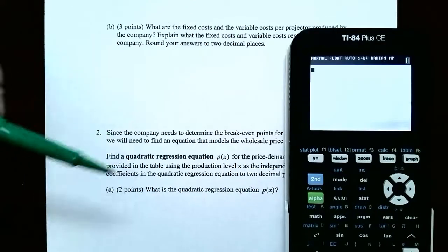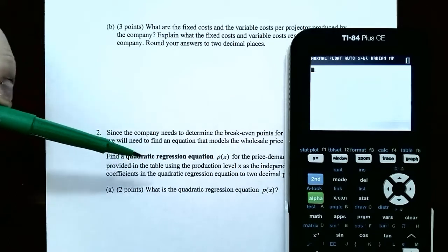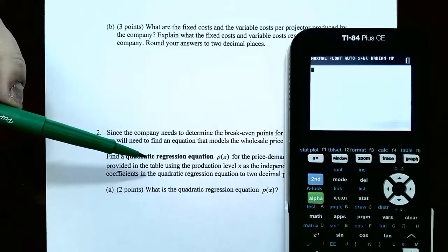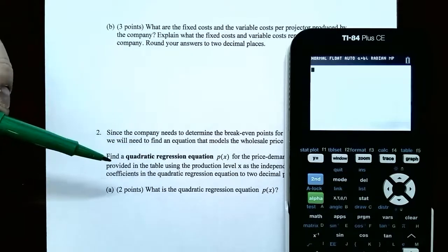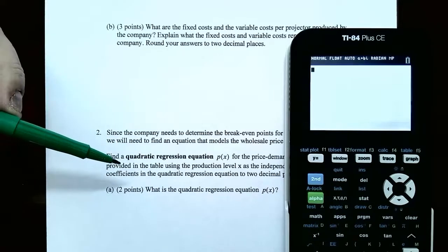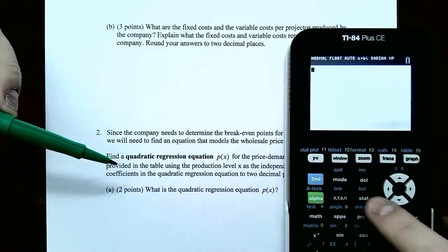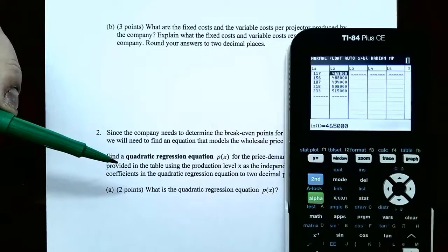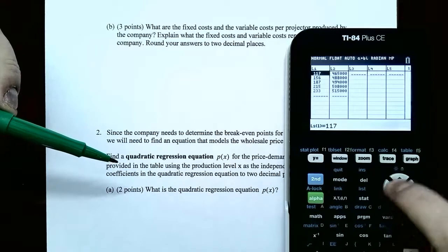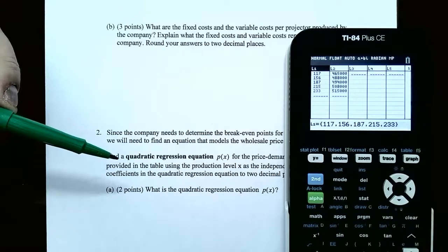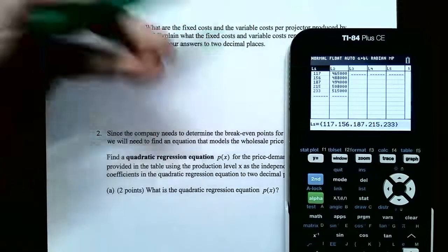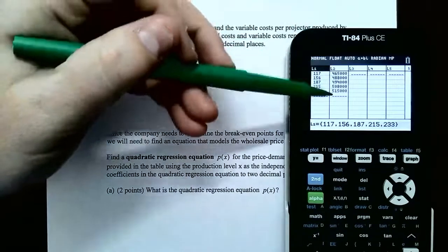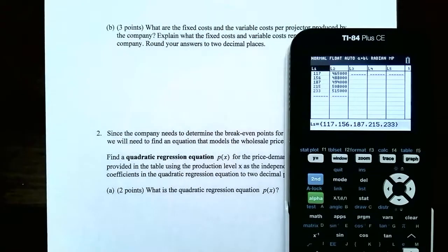The x values representing the production level as the independent variable are the same as before — that's still in List 1. But the output values, or dependent variable this time, is the wholesale price. Go back to STAT, Edit. Notice that L1 is perfectly fine because the production level was in List 1. But L2 still has the cost data from before, so we need to replace it with the wholesale price.